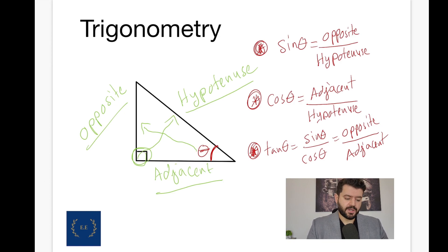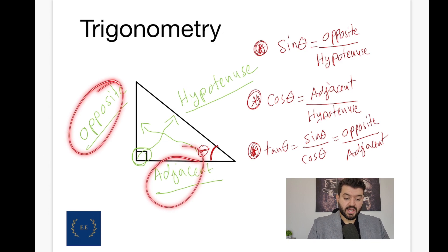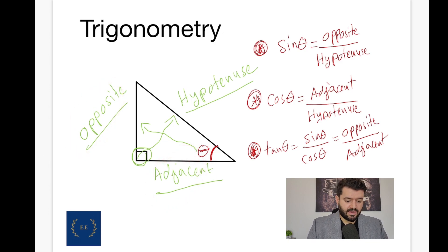Which led us to develop: sine theta is the opposite over the hypotenuse. Cosine theta is the adjacent over the hypotenuse. Tangent of theta is the sine of theta divided by cosine of theta, or the opposite divided by adjacent. Now, we're ready to have a very nice quick example to help us understand this.